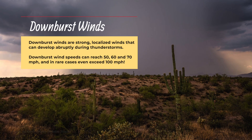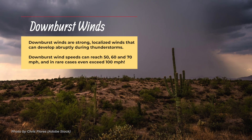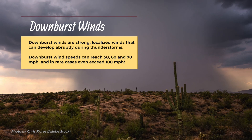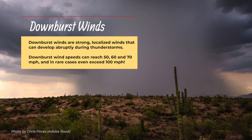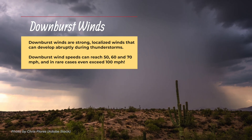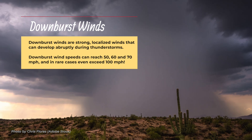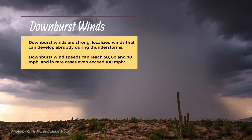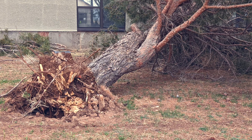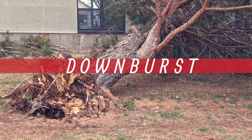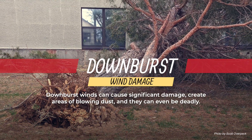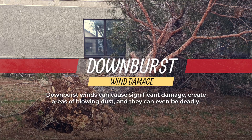Downburst winds are strong, localized winds that can develop abruptly during thunderstorms. Downburst wind speeds can reach 50, 60, and 70 mph, and in rare cases can even exceed 100 mph. Downburst winds can cause significant damage, create areas of blowing dust, and they can even be deadly.